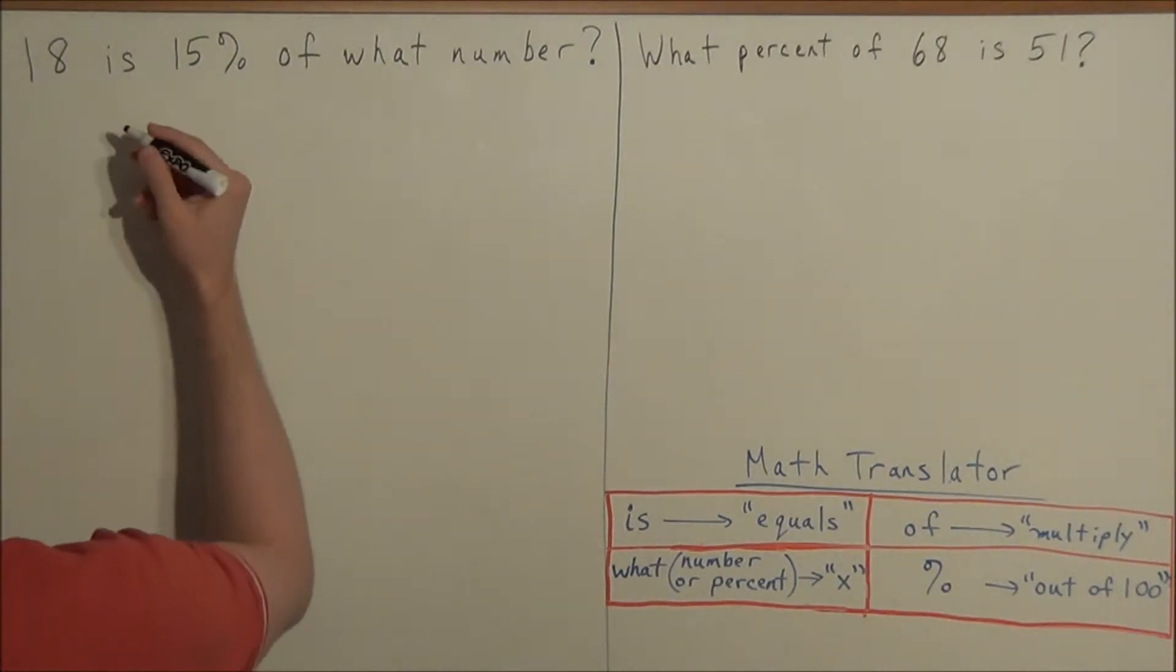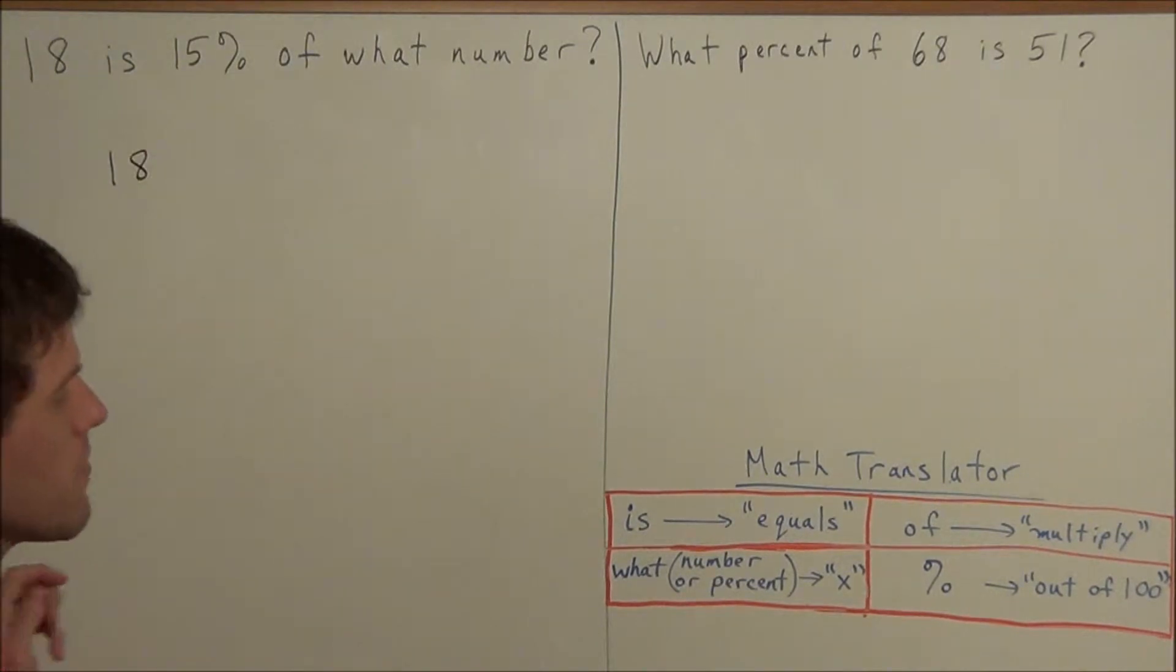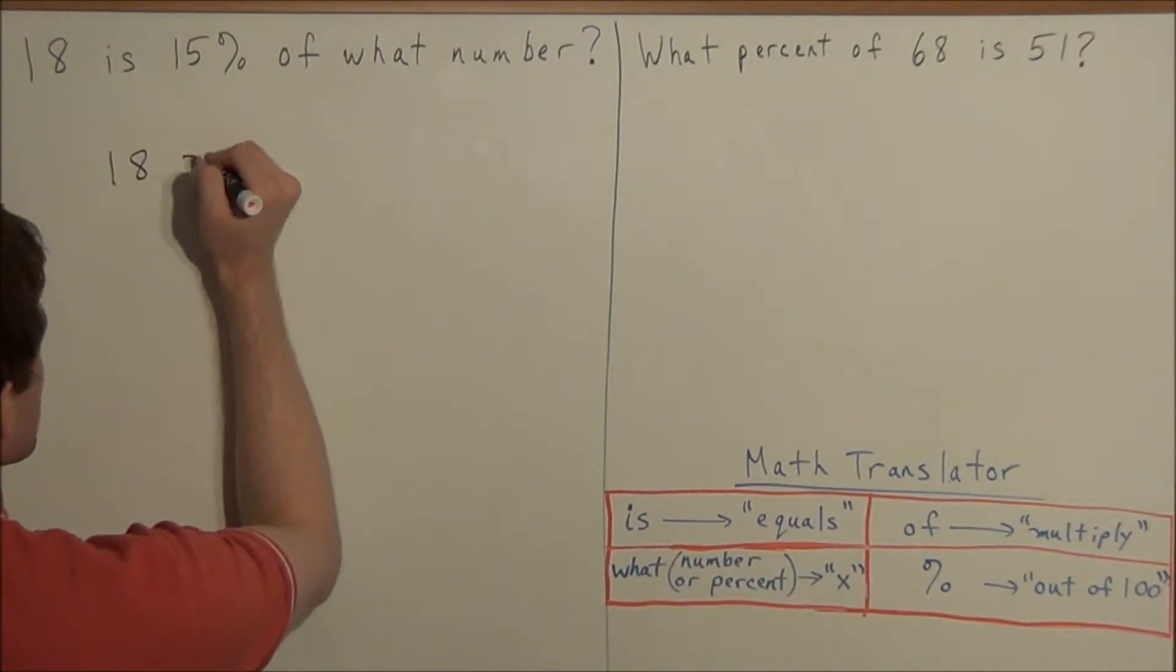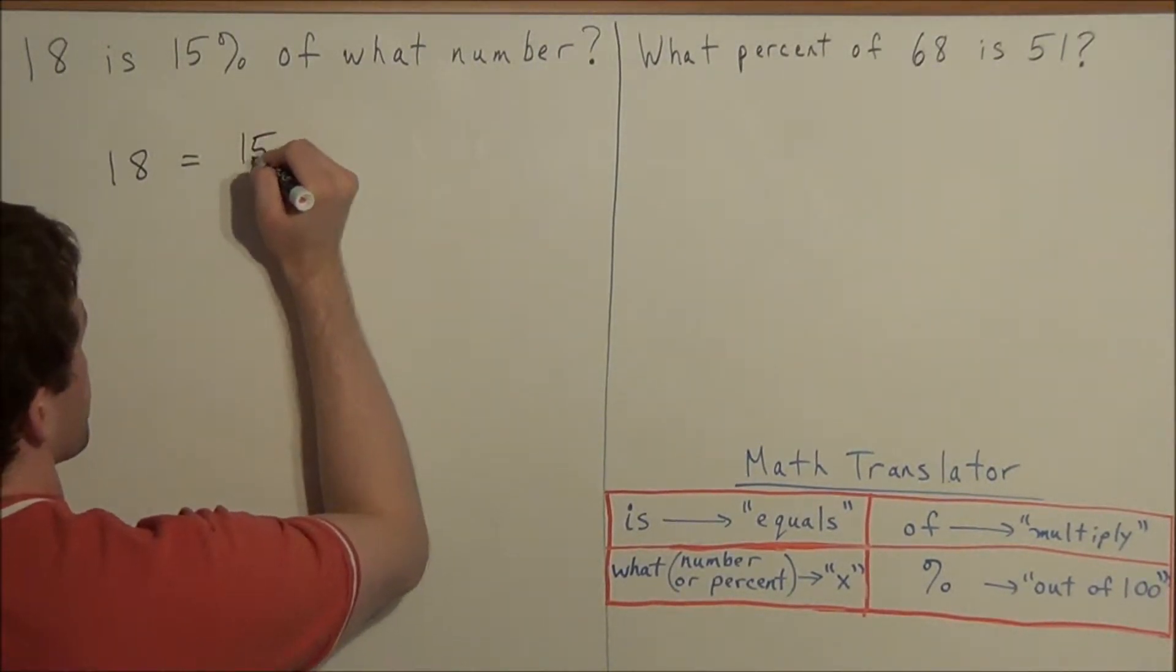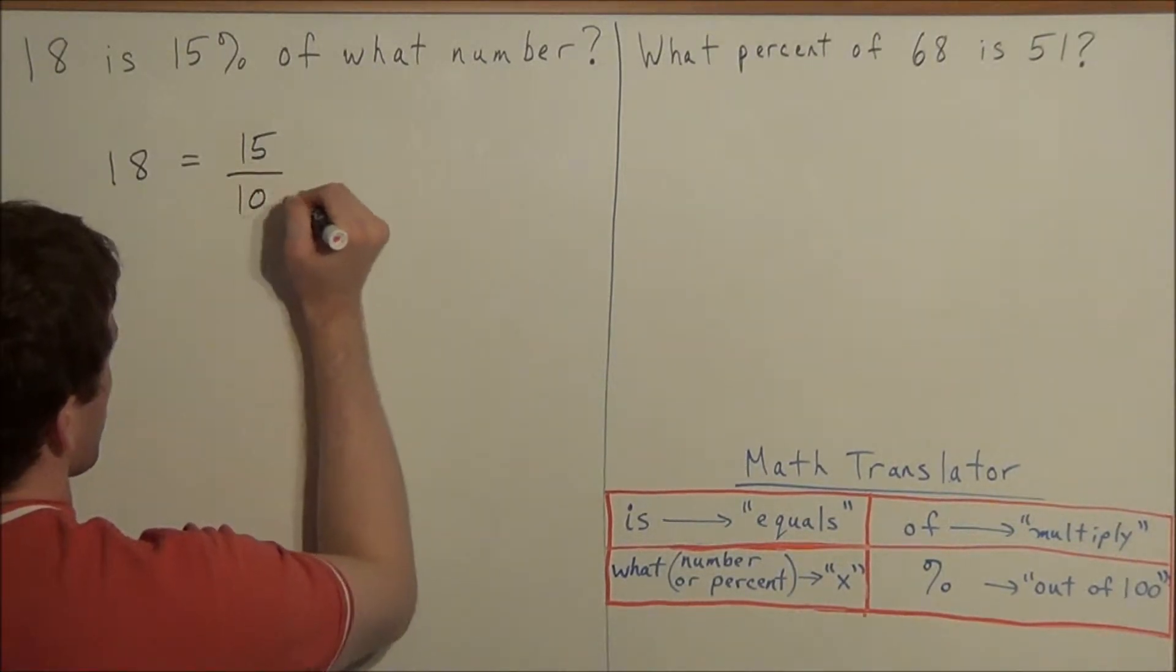For instance, we have 18, so we can start by writing our equation 18, but now we see the word is, and in math, is means equals. So we have 18 equals 15%. Now remember, percent means out of 100, so we can say 15 out of 100.